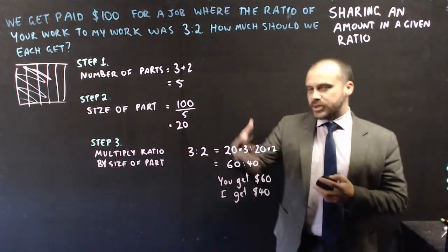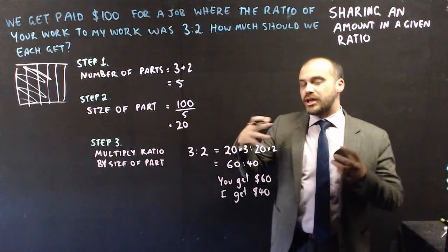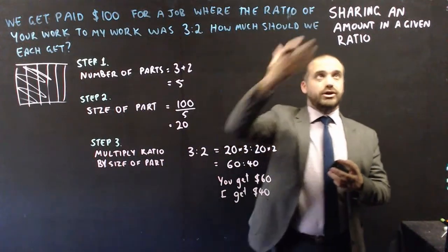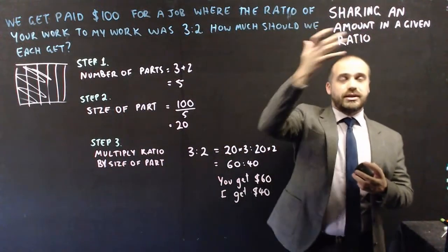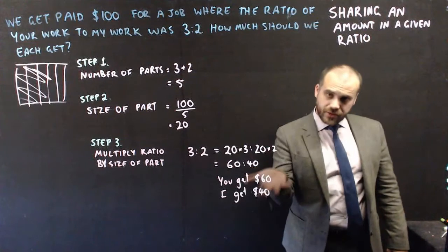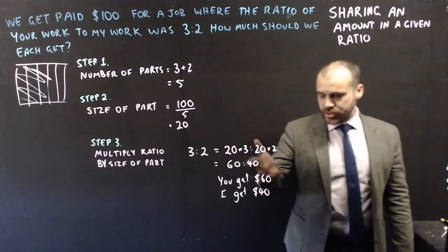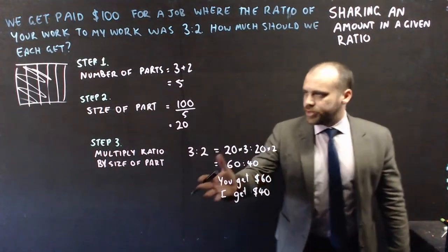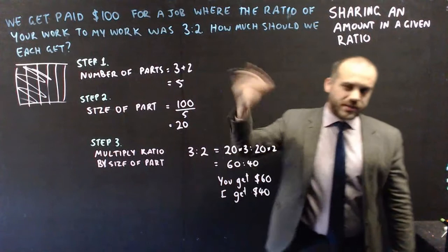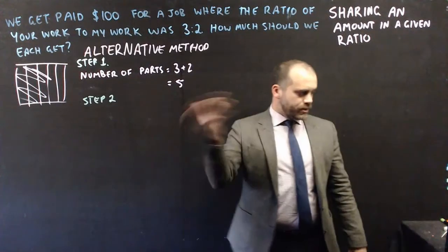That's how we can use ratios to share an amount in a given ratio. There is another way to do this which I'll show you now. Step 1 is the same for both methods — the difference is in steps 2 and 3.